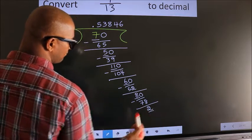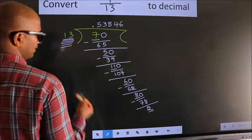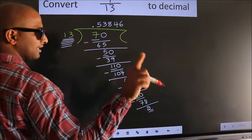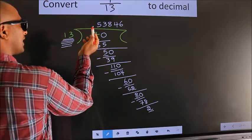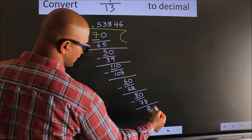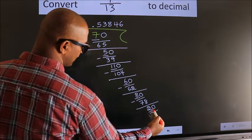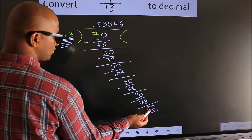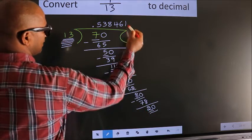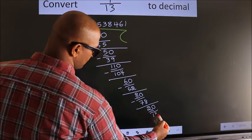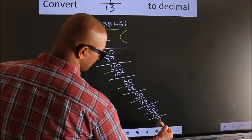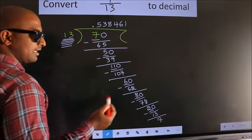Here we have 2, here 13. 2 is smaller than 13, and we already have the decimal, so we can directly take 0, making it 20. A number close to 20 in the 13 table is 13 ones — 13. Now we subtract and we get 7.